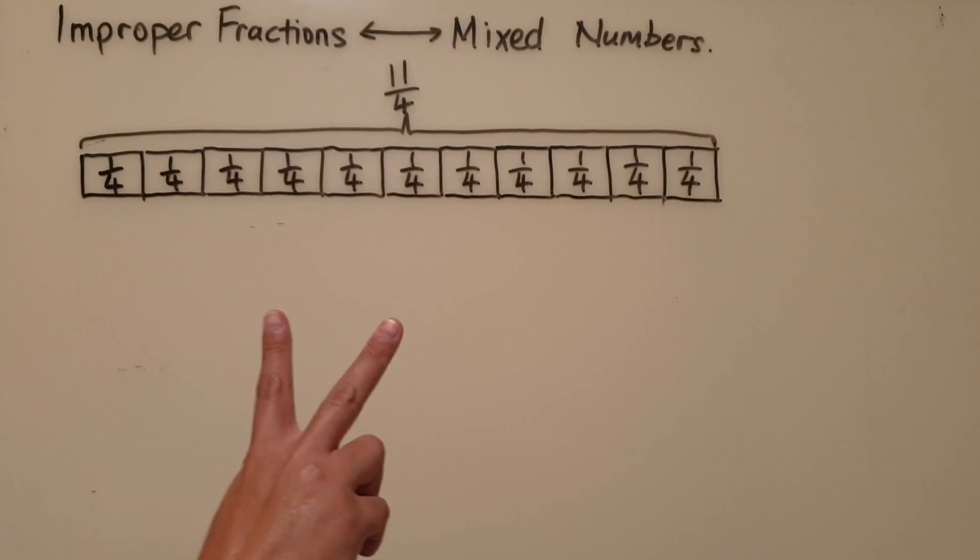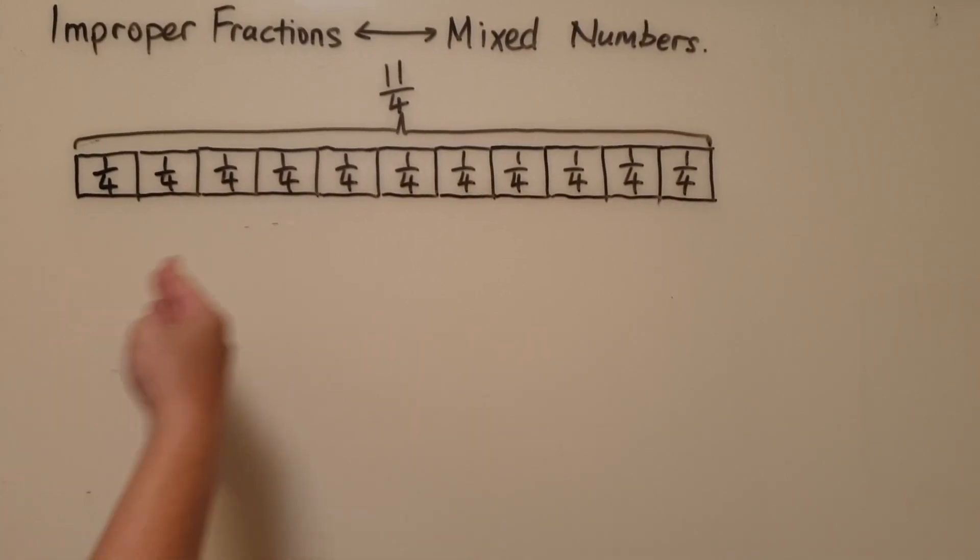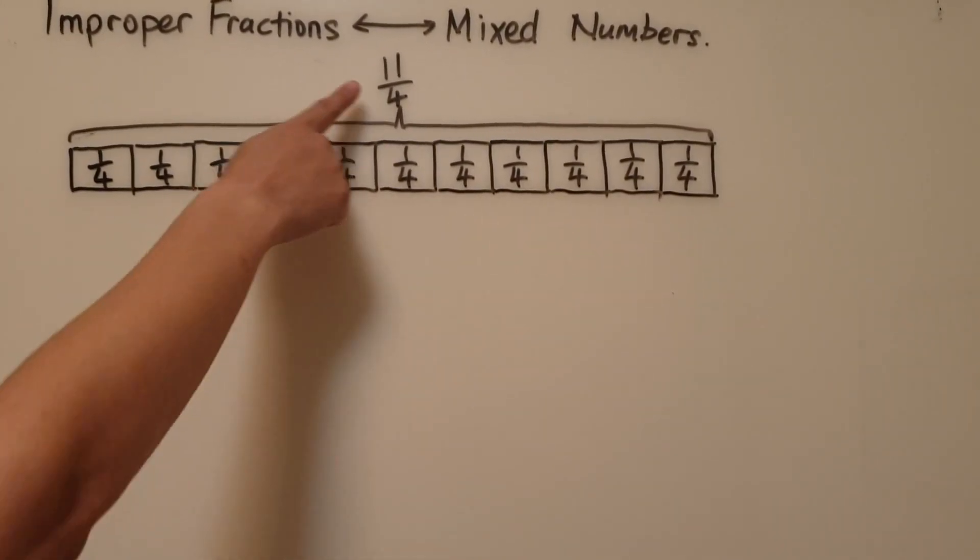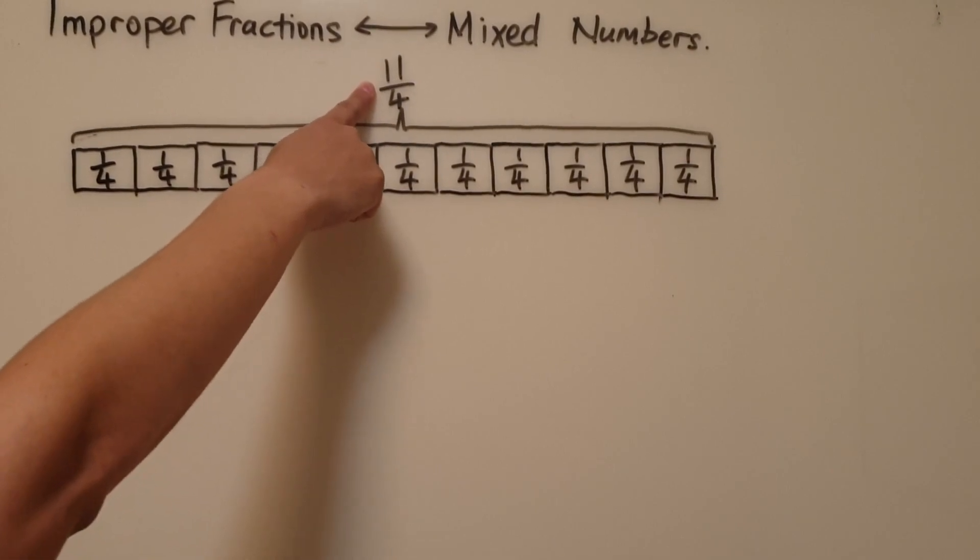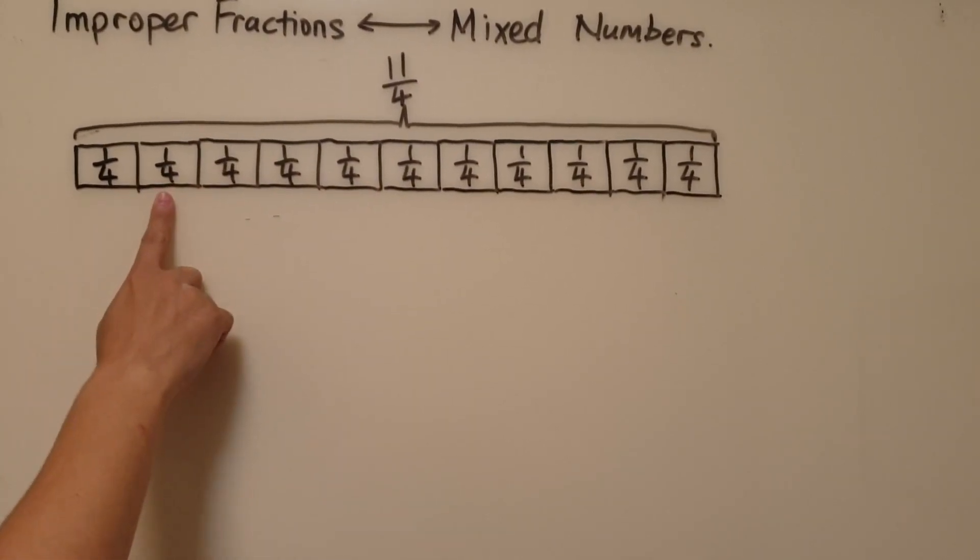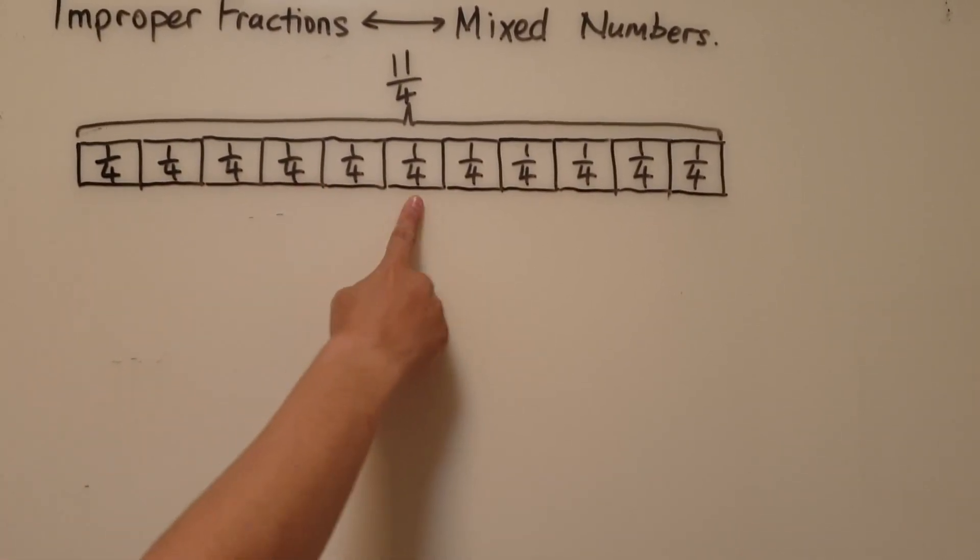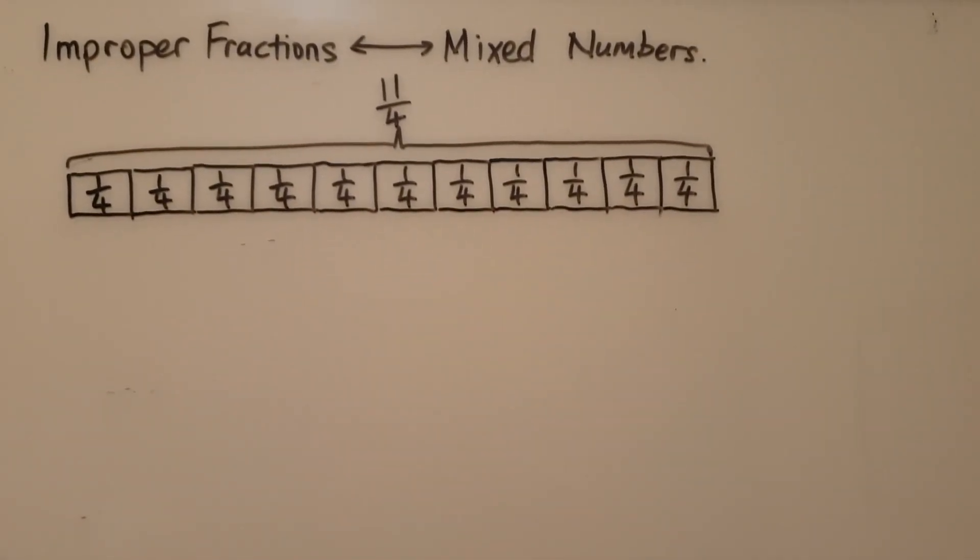In this second example, we are looking at a bigger improper fraction. We have 11 out of 4. So that means we have 1, 2, 3, 4, 5, 6, 7, 8, 9, 10, and 11 quarters.